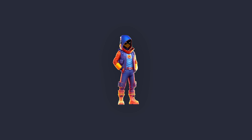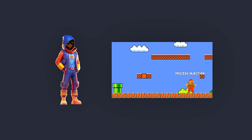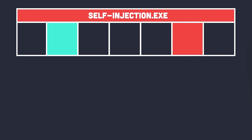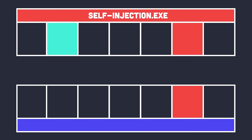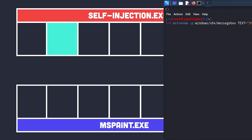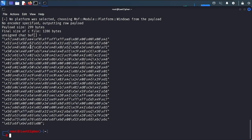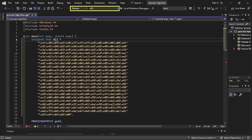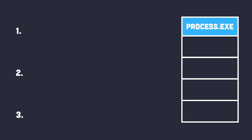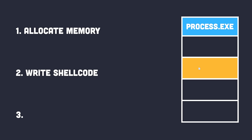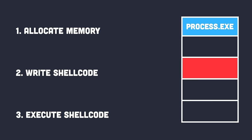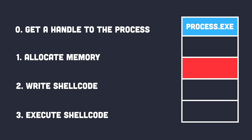Now let's upgrade the self-injection technique to process injection. In self-injection, we injected our shellcode into the memory space of our own process. In process injection, we inject into the memory space of another running process — let's say Microsoft Paint. Since Paint is a 64-bit process, we'll use a 64-bit shellcode. We run the same msfvenom command adding the -a flag for architecture set to x64. In process injection, we add one more step before the three standard steps: we first get a handle to the target process.